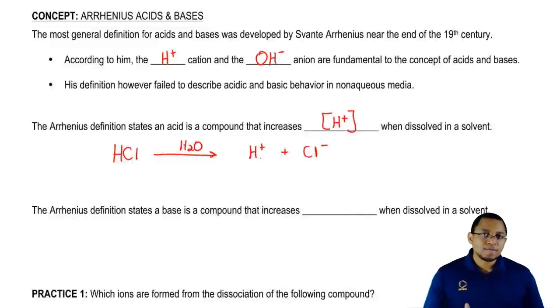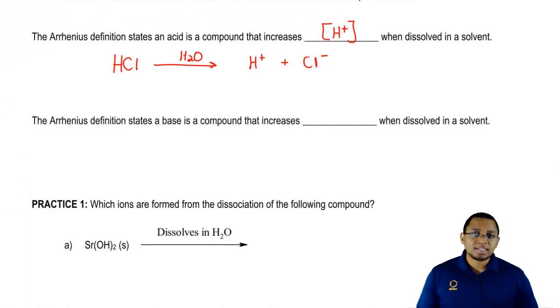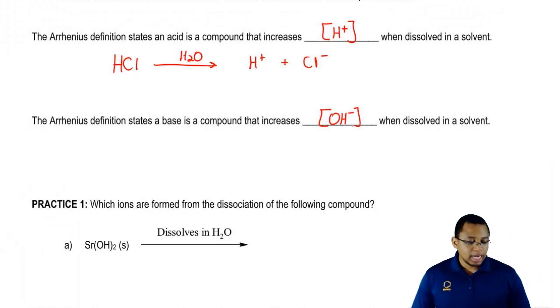Now that we know the definition for an acid, let's look at the definition for a base. According to the Arrhenius definition, a base is a compound that increases the concentration of OH minus when dissolved in a solvent.